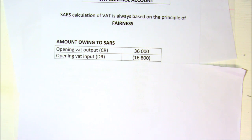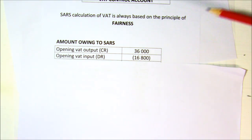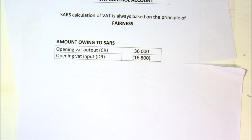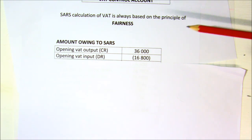I am using the first of your questions on VAT. I'm not doing ledger accounts — I'm calculating whether we owe SARS money or whether they owe me money. I'm doing a calculation and working with pluses and minuses instead of debits and credits. The first thing you are told is that you've got a VAT output of R36,000.